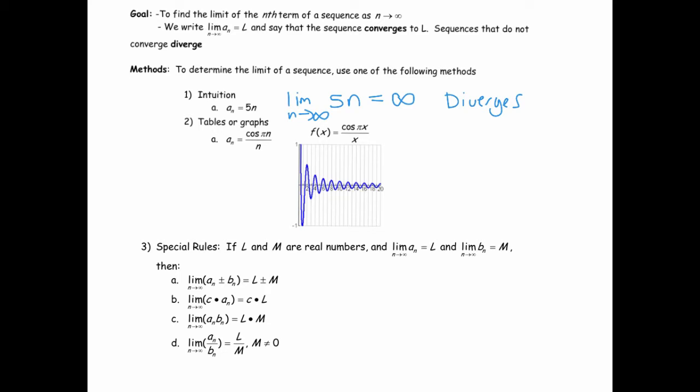Another method we'll use is we'll understand sequences by comparing them to the functions related to them whose domain are all real numbers. Think about the sequence cos(πn)/n. To understand this, it's much easier to graph functions where the domain is real numbers. You can just compare that to the behavior of cos(πx)/x whose graph is below.